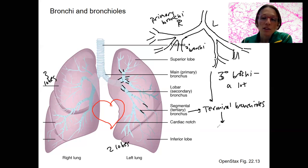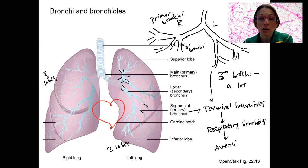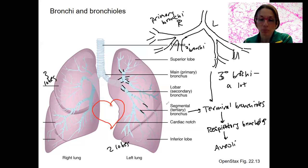Terminal bronchioles ultimately end in respiratory bronchioles and then alveoli. By this time we've gotten from one trachea to millions of alveoli from this repeated branching, kind of like a tree branch.